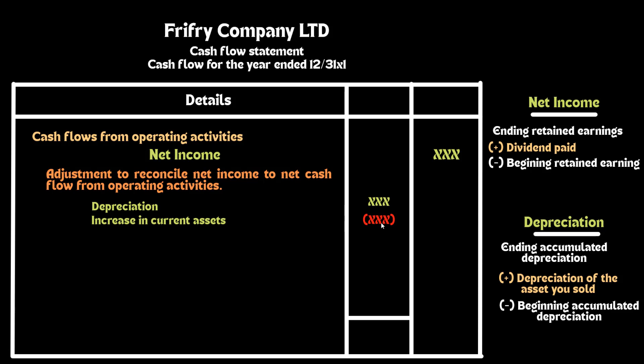The second thing is an increase or decrease in the current asset. Current assets are the assets that are expected to be converted to cash within a year. So accounts receivable, inventories, and supplies are all examples of current assets.